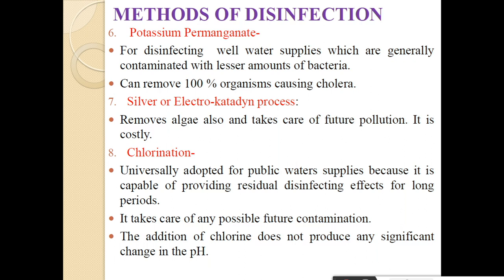Next method is the silver electrocathodine process. This silver and electrocathodine process removes algae and takes care of future pollution. But the drawback is that these methods are very costly.